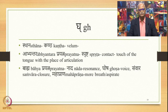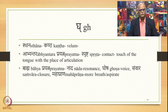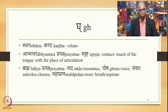Similarly, the next consonant in the ka class is gha. The sthana is kantha, abhyantara prayatna is sprashta — contact or touch of the tongue with the place of articulation. The bahya prayatna is same as ga except mahaprana. So the bahya prayatna is nada, ghosha, and samvara — resonance, voice, and closure. Gha differs from ga in being mahaprana: it requires more breath and is called an aspirate sound. Compare: gha, gha.